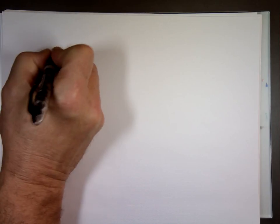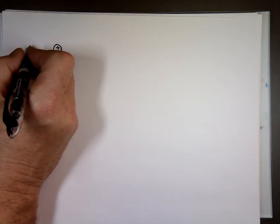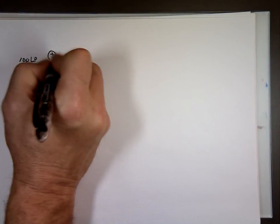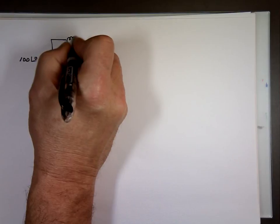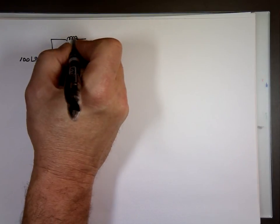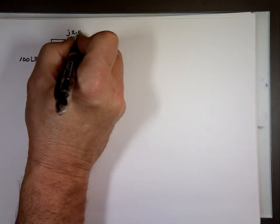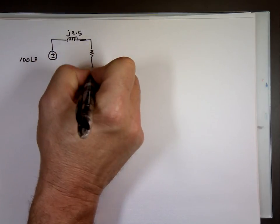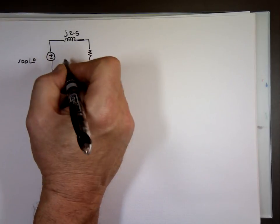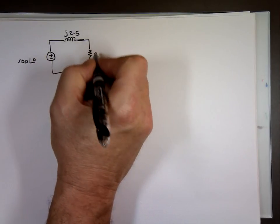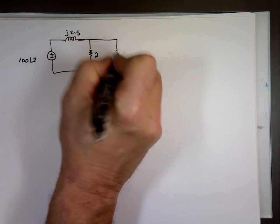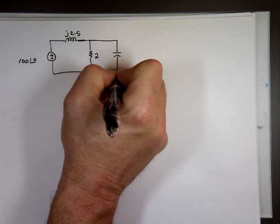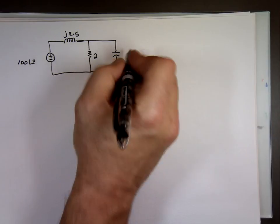We have a voltage source here, AC source, 100 angle zero. It's going through an inductor here, J2.5. It's going through a resistor here, the value of two, and it's going through a capacitor right there, negative 1J.